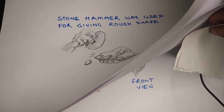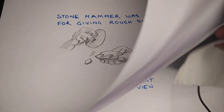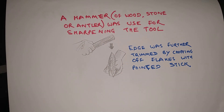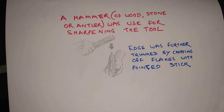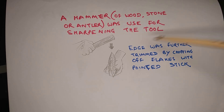After this step, the piece of rock was further sharpened by using a hammer, which could be made of wood, stone, or antler. The edge of the tool was further trimmed by chopping off flakes with a pointed stick.